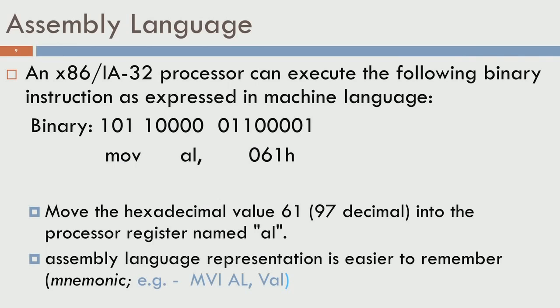Somewhere down the line you may learn a language called assembly language, and we're seeing a small example here. An x86 Intel 32 processor can execute the following binary instruction. You have 1011, four zeros, 0011, four zeros and a 1. This is a binary code for moving 61 in hexadecimal to an internal memory called a register named AL.